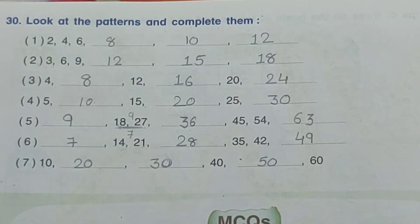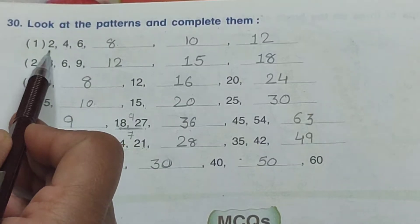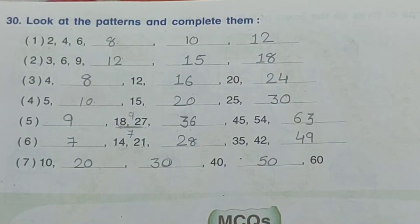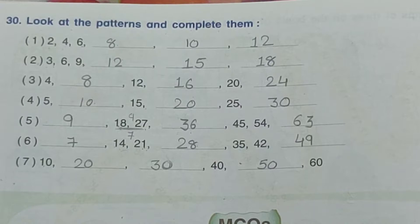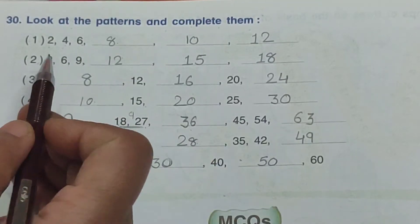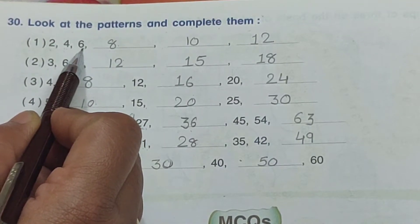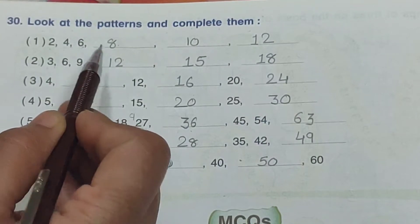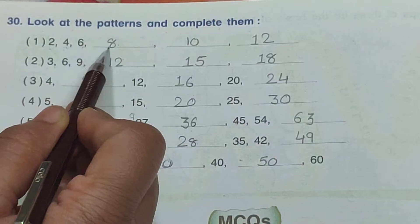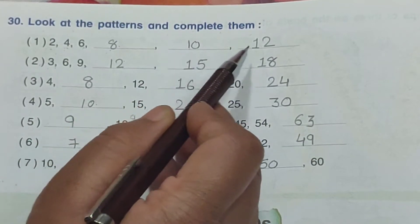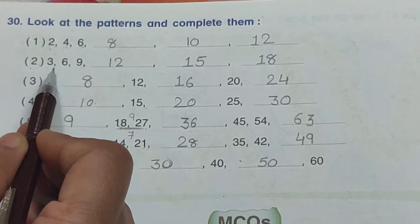Here a pattern is given and you have to see it properly, understand it properly, and then complete it. Now see the first one: 2, 4, 6, dash, dash, dash is given. If you look at this — 2 ones are 2, 2 twos are 4, 2 threes are 6 — so this is the 2 times table. So next: 2 fours are 8, write down 8. 2 fives are 10, write 10. 2 sixes are 12, so write 12.